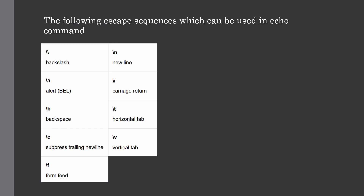We can use the -E option to disable the interpretation of backslash escapes, and we can also use the -n option to disable the insertion of a newline.